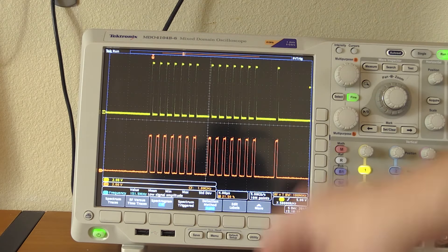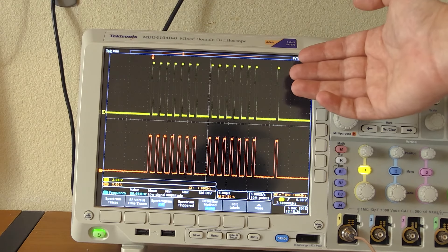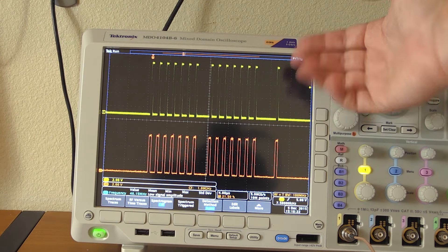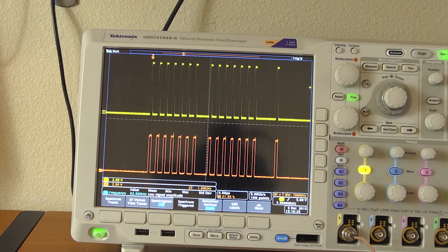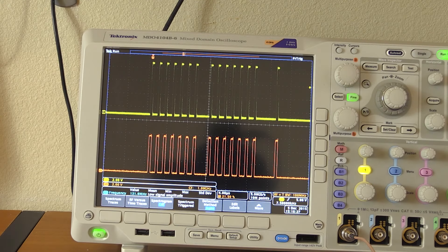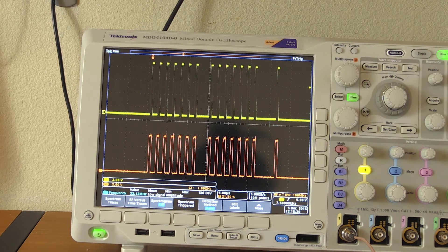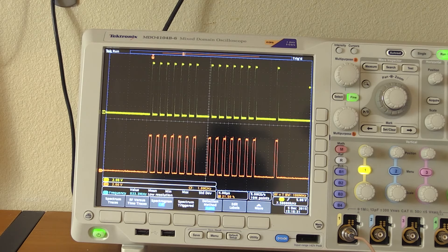So yet again, what we see right here is what we expect our 777 plus ident to look like. This is the RF shape that we're seeing here. Now there's only one thing left to do. And that is plugging it into RTL 1090 and seeing what comes out of it.